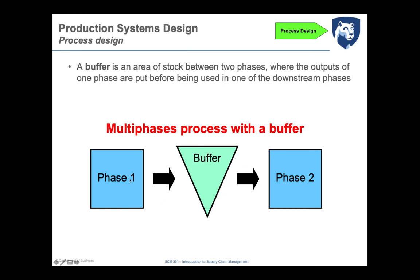When we have more than one operation, we call this a multi-phase process. When two phases are separated by a stock, that stock decouples the two phases. This is called a buffer — a stock area between two phases where the output of one phase is held before being used in a downstream phase.